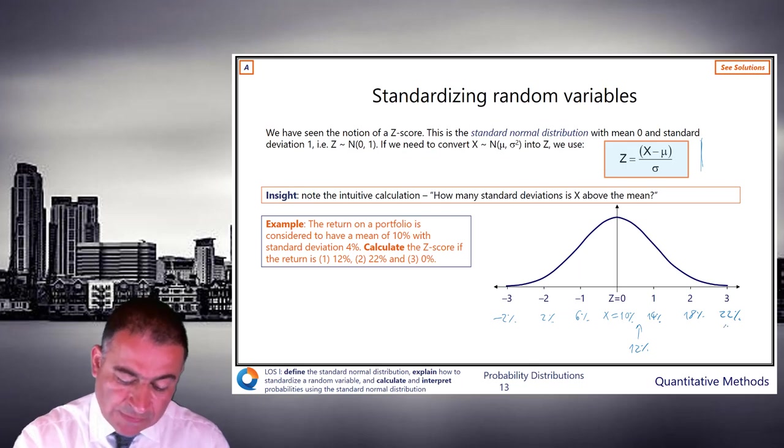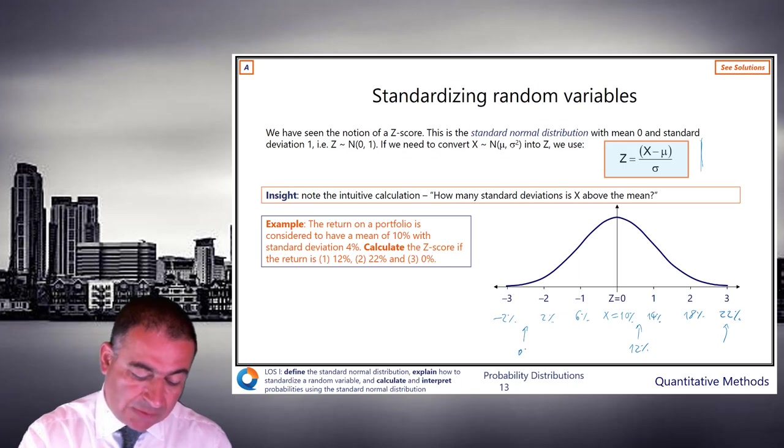22% you can see. And 0 is going to be halfway between 2 and minus 2. And really, those are our answers.